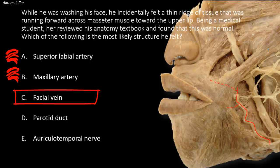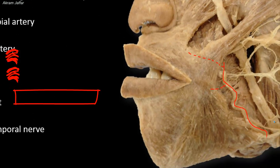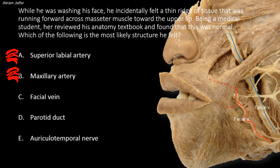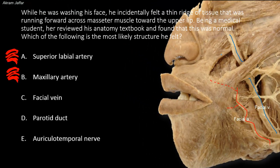The third choice is the facial vein. The facial vein runs posterior to the facial artery. You can see the facial vein here, also on the front of the masseter, but it is posterior to the facial artery toward the medial canthus of the eye. It is characterized by a straighter course than the tortuous artery. Having this course anterior to the masseter, it is away from where the ridge of tissue was felt.